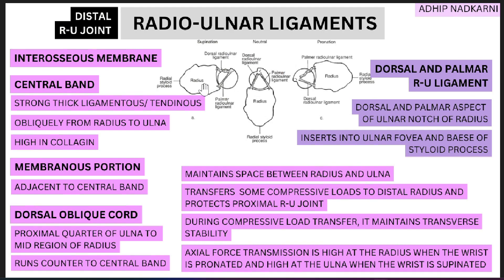Looking at this picture: the distal radio-ulnar joint is shown in supination, neutral, and pronation. This is your radius and this is the ulna. The ulnar notch has a dorsal part and a palmar part. From the dorsal aspect of your ulnar notch, the dorsal radio-ulnar ligament comes, and from the palmar aspect, the palmar radio-ulnar ligament comes — both going to the fovea and the base of the styloid process of the ulna. During supination, the dorsal side becomes lax and the palmar side is taut; in pronation, the palmar side is lax and the dorsal side is taut.